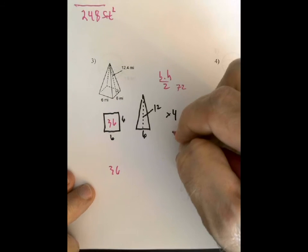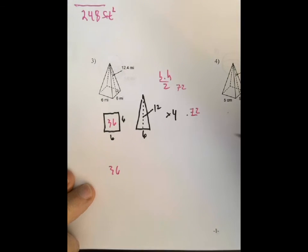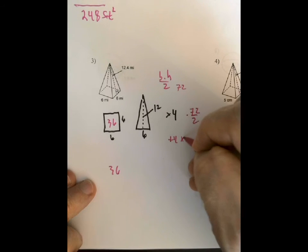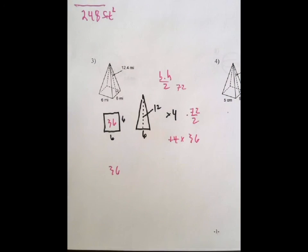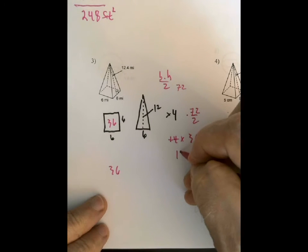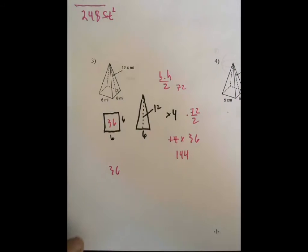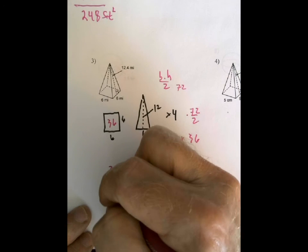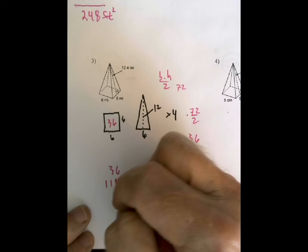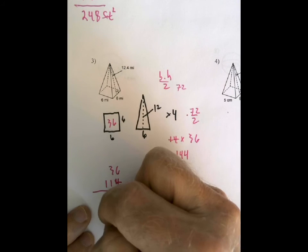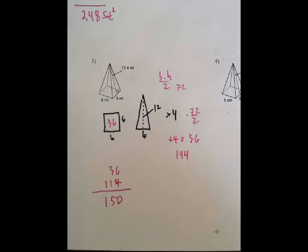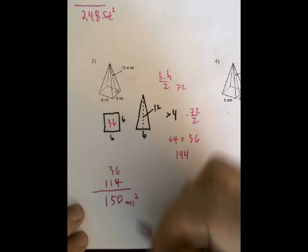Divided by 2 is 36, so it's 4 times 36. Four times 36, that's 144, so that's equal to 144. So the entire area is 36 plus 144 which is equal to 180 square miles.